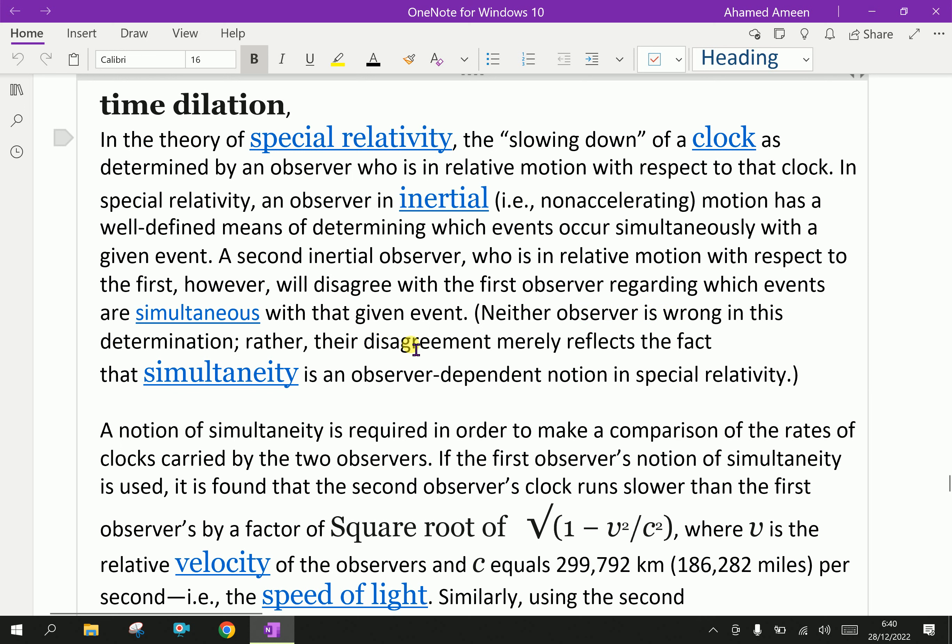With that given event, neither observer is wrong in this determination. Rather, their disagreement merely reflects the fact that simultaneity is an observer-dependent notion in special relativity.